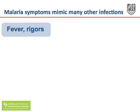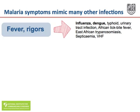Many diseases that are common in the same areas where malaria occurs may look like malaria. Fever and rigors occur in malaria, but they also are common features of influenza, and if you look back on patients who died of malaria, influenza was often the first, second, or third misdiagnosis. Dengue, typhoid, African tick bite fever, and East African trypanosomiasis are important considerations in patients who develop fever and rigors in areas where these diseases occur.